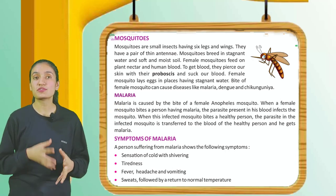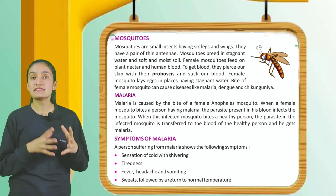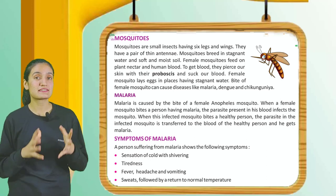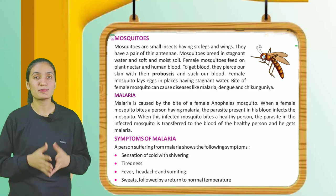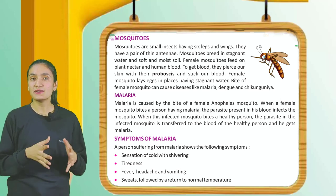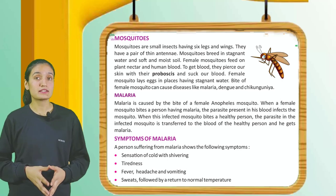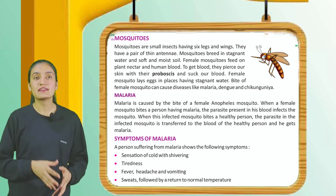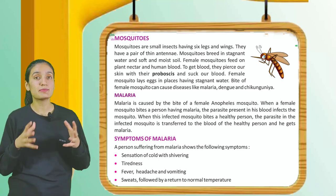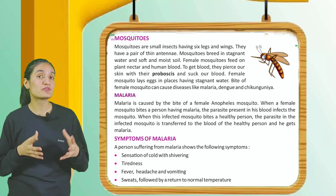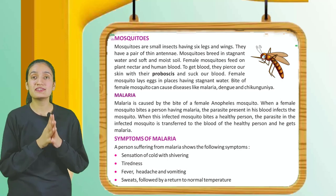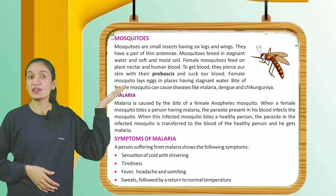Mosquitoes: Mosquitoes are small insects having six legs and wings, and a pair of thin antennae. Mosquitoes breed in stagnant water and soft, moist soil. Female mosquitoes feed on plant nectar and human blood. To get blood, they pierce our skin with their proboscis. Female mosquitoes lay eggs in places with stagnant water. Bites from female mosquitoes can cause diseases like malaria, dengue, and chikungunya.